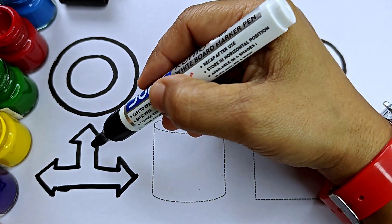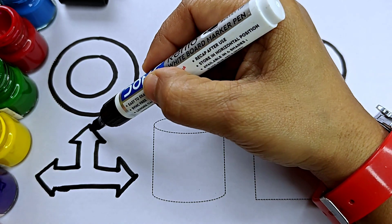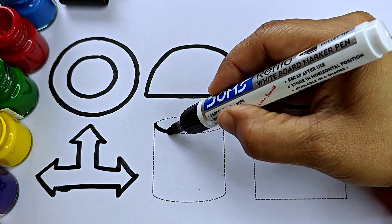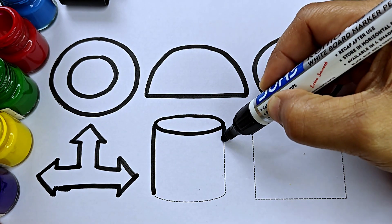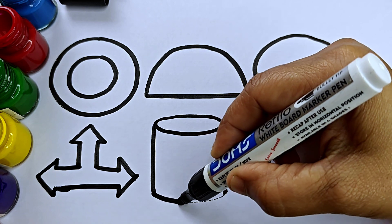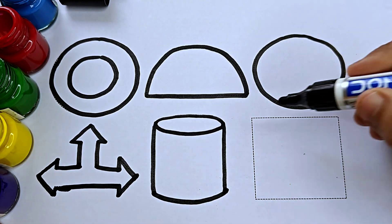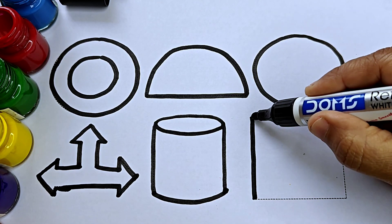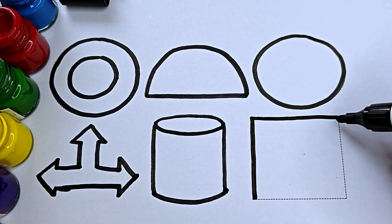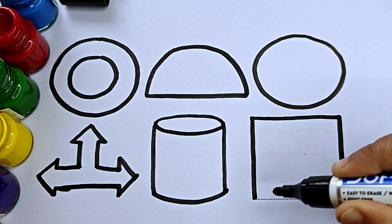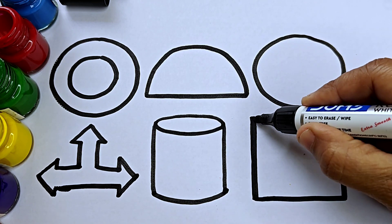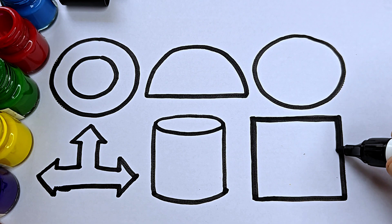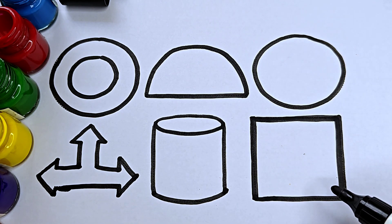Left right and up arrow, left right up arrow. Cylinder. Square.